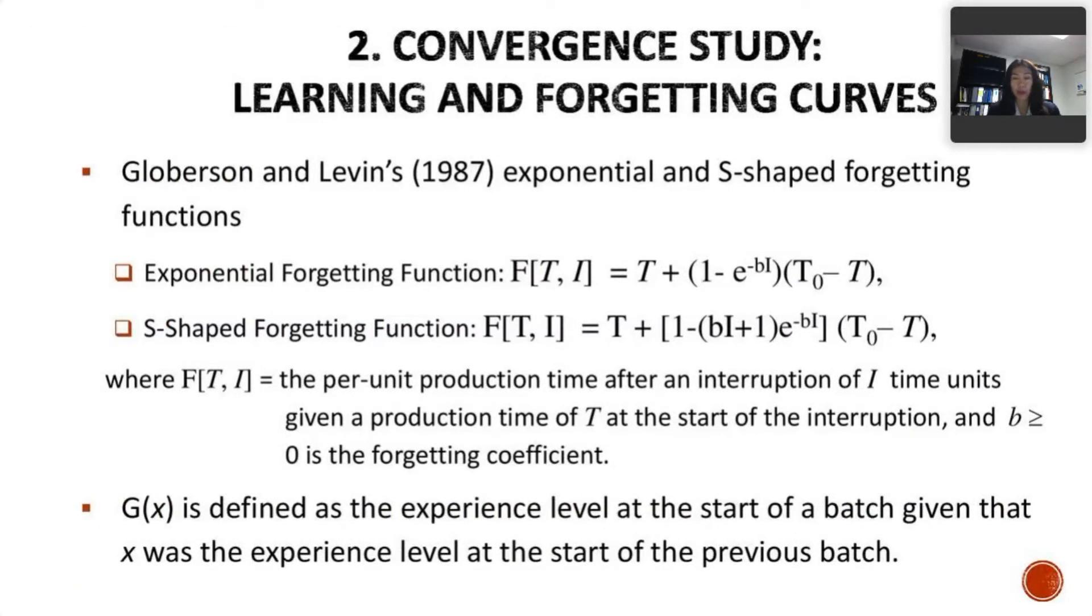The forgetting curve that we use is the Globerson and Levin exponential and S-shaped forgetting function. The function F[T, I] represents the per unit production time after an interruption of I time units given a production time of T at the start of the interruption, and b here is the forgetting coefficient. We define the function T(x) as the experience level at the start of a batch given that x was the experience level at the start of the previous batch.